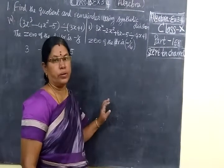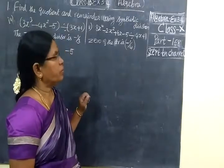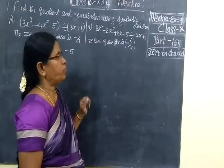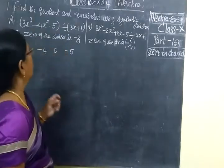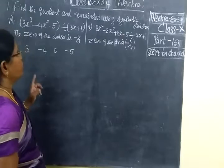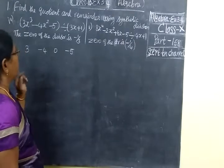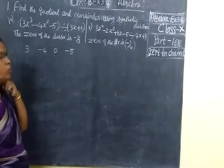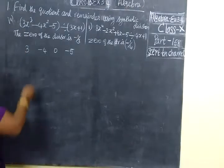Good evening students. Today we are seeing Essay 3.4 path 158. We are using synthetic division and finding quotient and remainder.